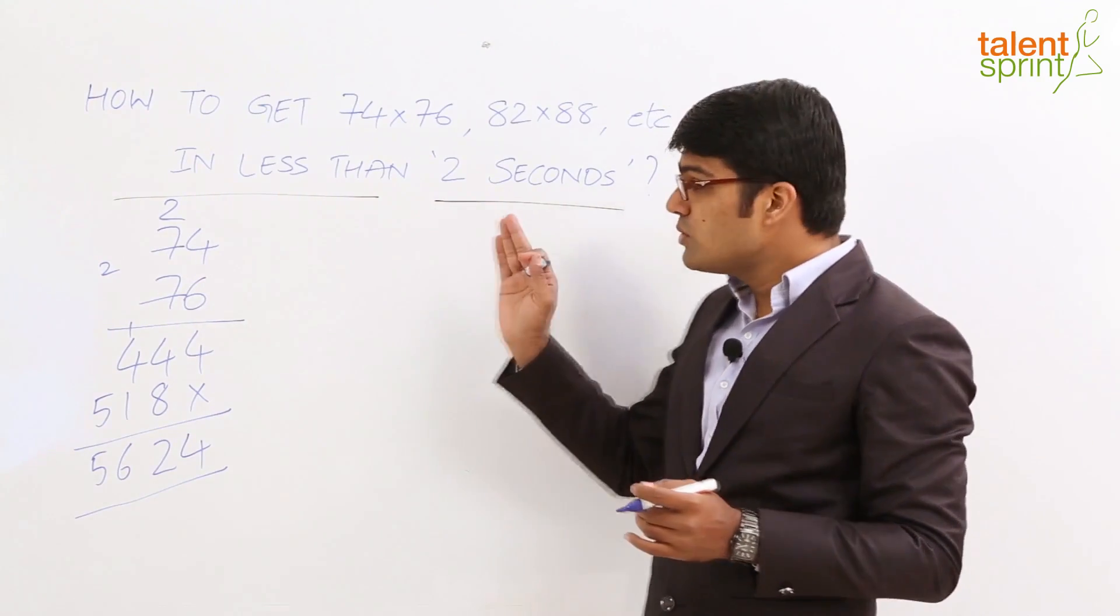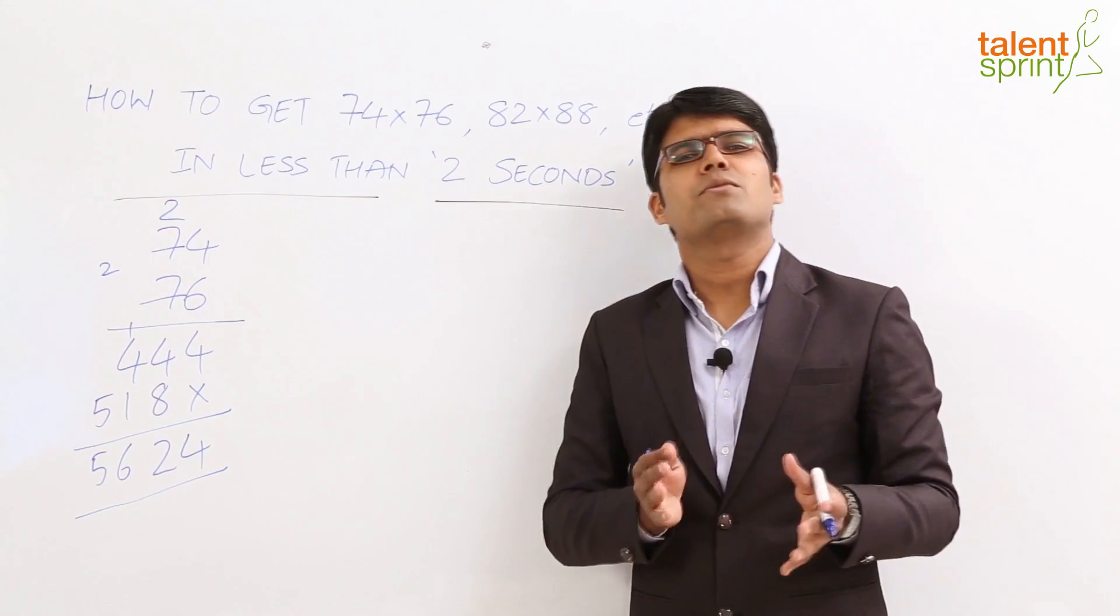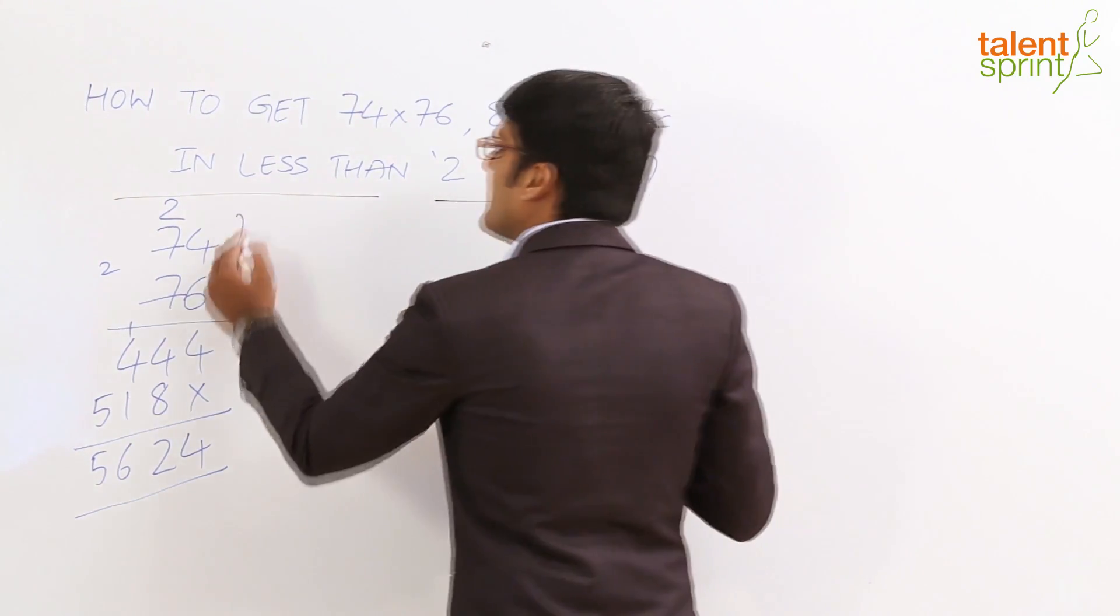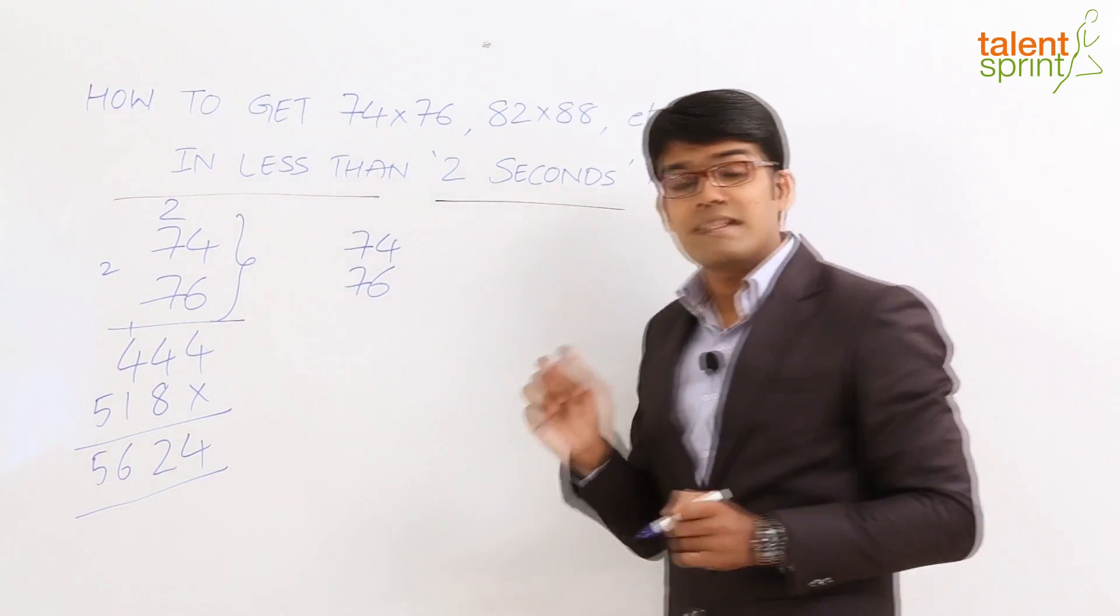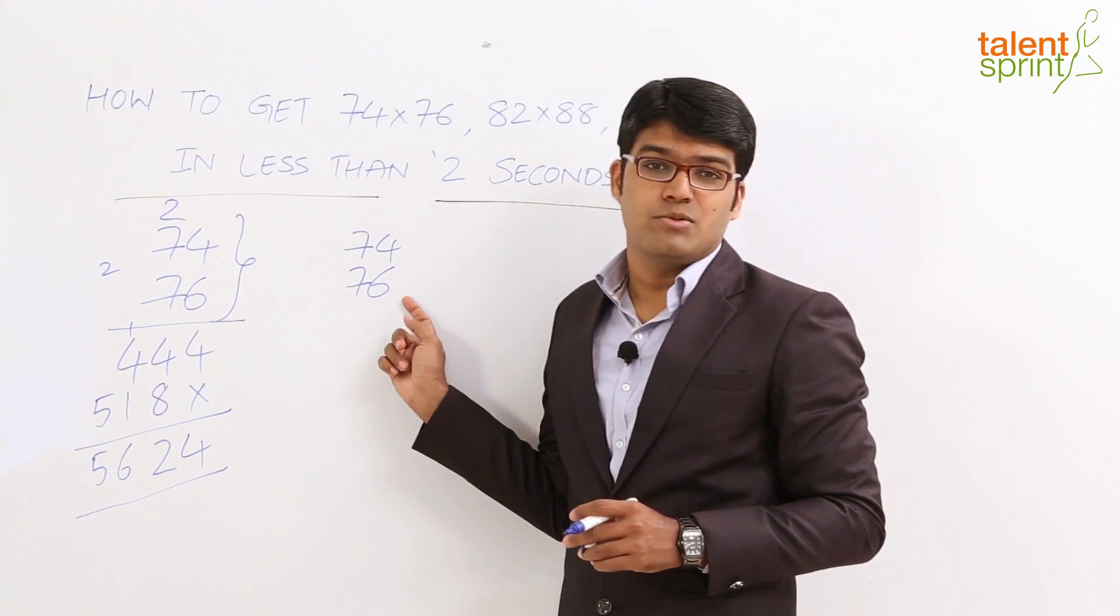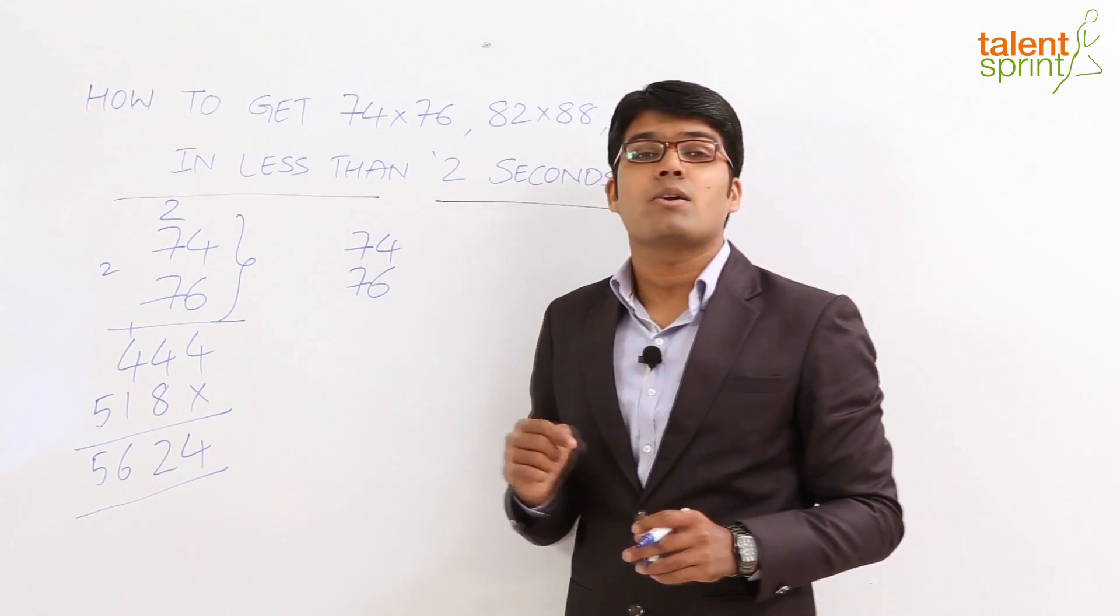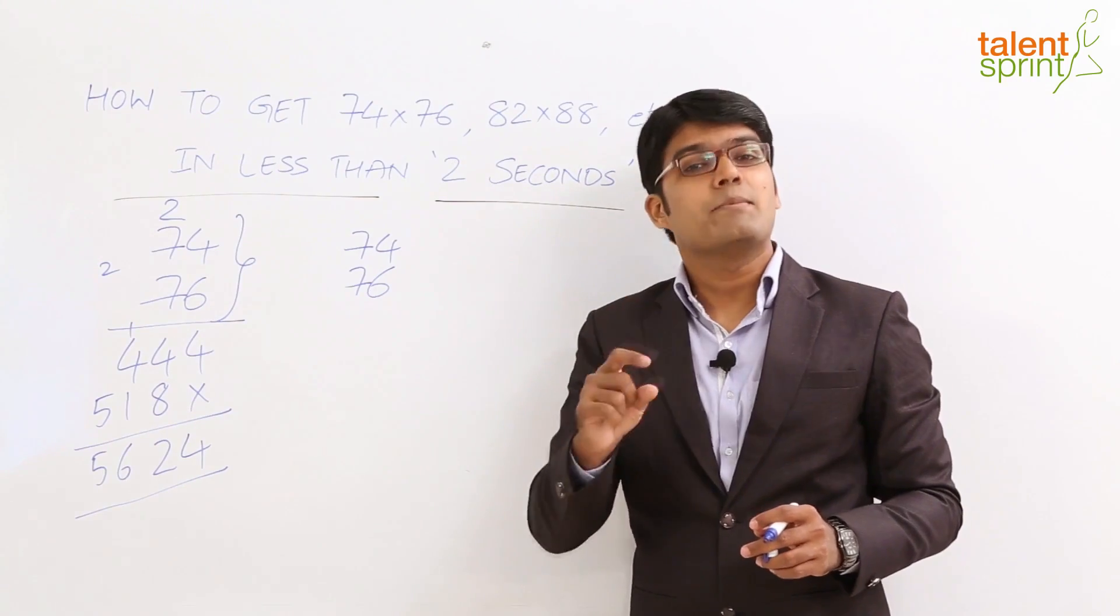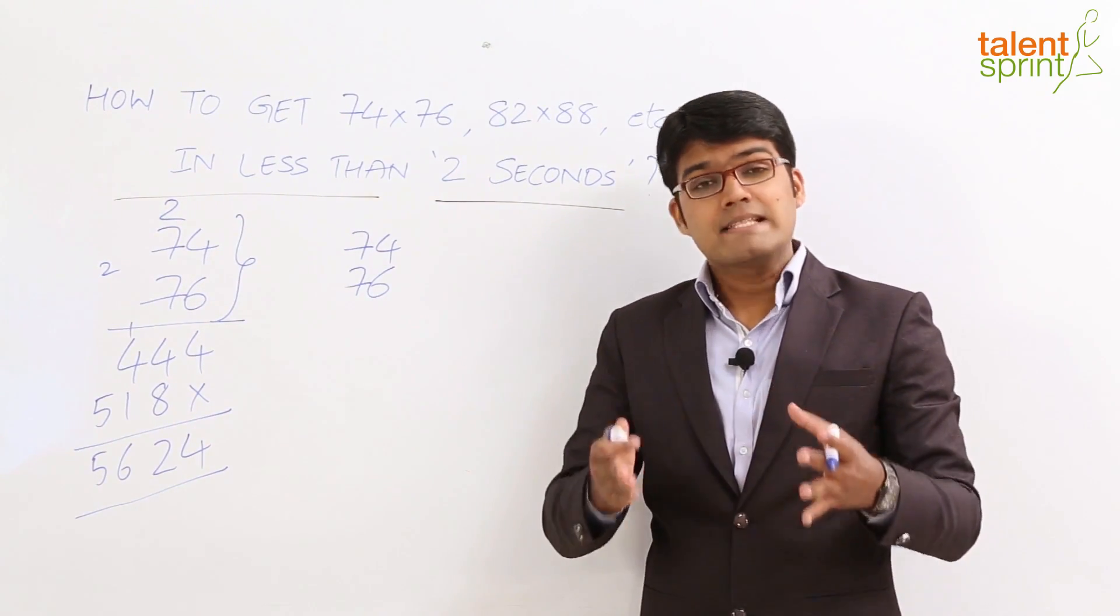Now let us see how to do the same multiplication in just about 2 seconds without having to write much on paper. If you look at the numbers 74 and 76, these are partially complementary numbers. What is special about them? Add the unit places: 4 and 6 add up to 10, and the tens places are both equal. Such numbers are called partially complementary numbers.